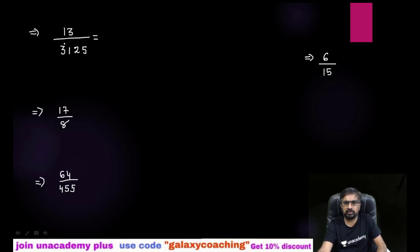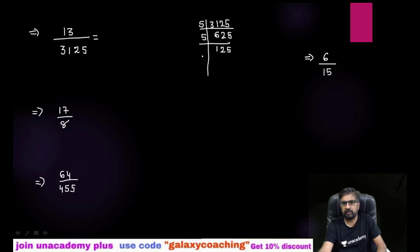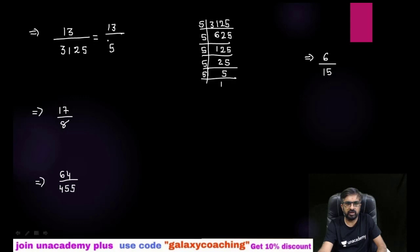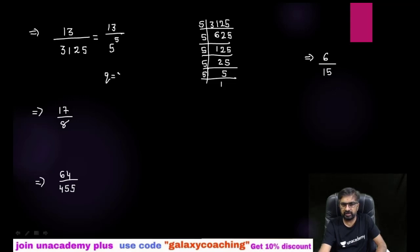You just need to find out the factors of the denominator. For example, the factors of 3125 come out to 5 raised to the power 5. If the denominator is in the form of 2 raised to M multiplied by 5 raised to M, then you can say that number will be terminating.